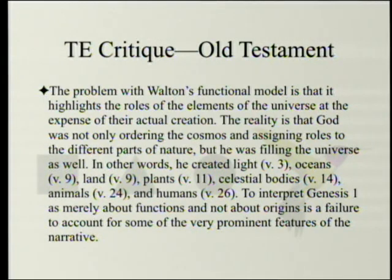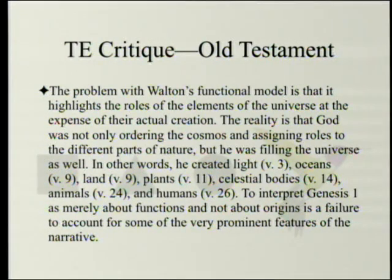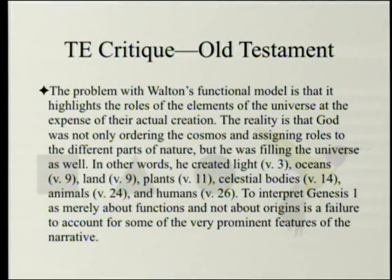The reality is that God was not only ordering the cosmos and assigning roles to the different parts of nature, but he was filling the universe as well. In other words, he created light, oceans, land, plants, celestial bodies, animals, and humans. To interpret Genesis 1 as merely about functions and not about origins is a failure to account for some of the very prominent features of the narrative.